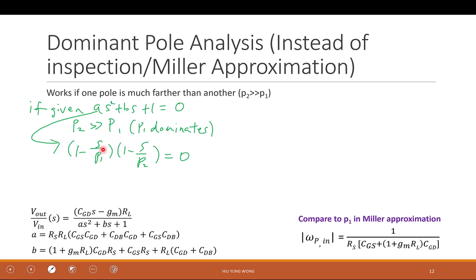Because this is 0, so I can multiply anything so that this is the same. If I know the root of a quadratic equation, I can always put it as 1 minus S divided by root times 1 minus S divided by another root equal to 0. The quadratic equation. Make sense?